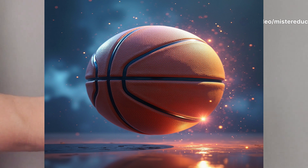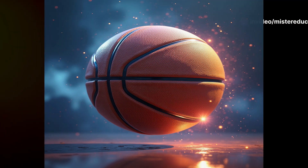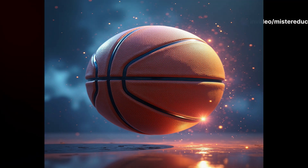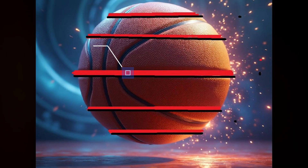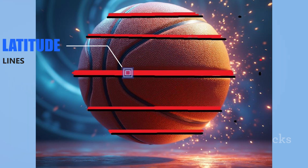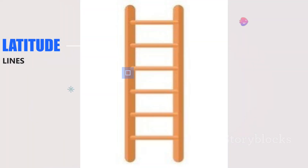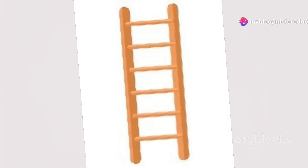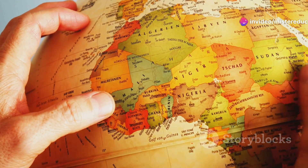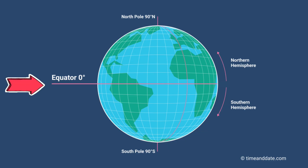Think of the earth like a giant basketball. Now, imagine it covered in a grid. The horizontal lines — those are latitude lines. They run east to west, like the lines on a ladder. Latitude tells us how far north or south you are from the equator. The equator — that's the zero-degree latitude line, the belly of the earth.